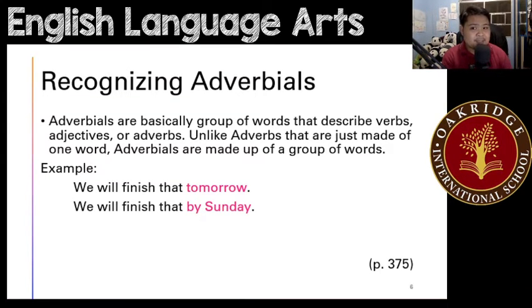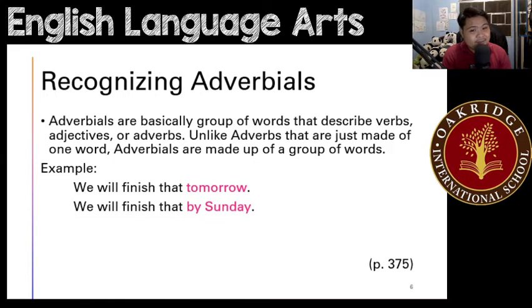Adverbials, basically, these are groups of words that describe verbs, adjectives, or adverbs. So they are like adverbs. But unlike adverbs, adverbs are just made up of one word. When you say adverb, that's just one word. But when you use adverbials, these are a group of words.